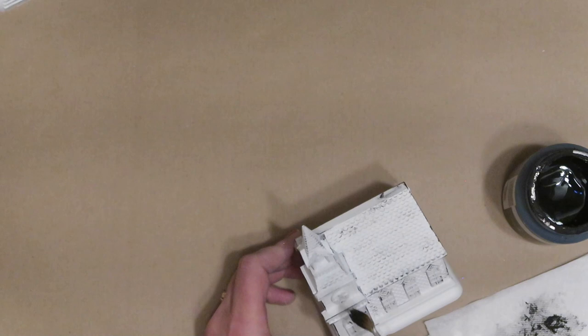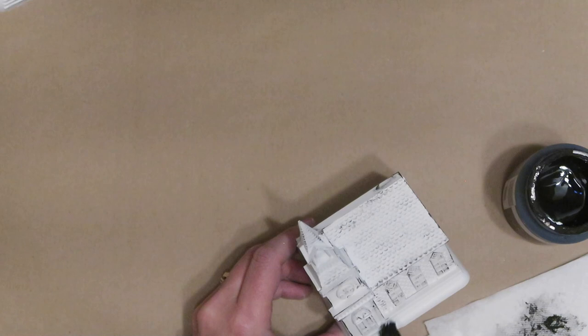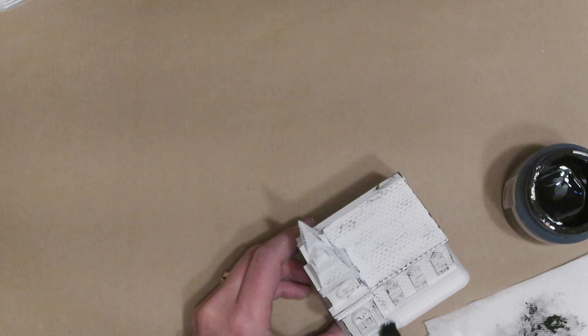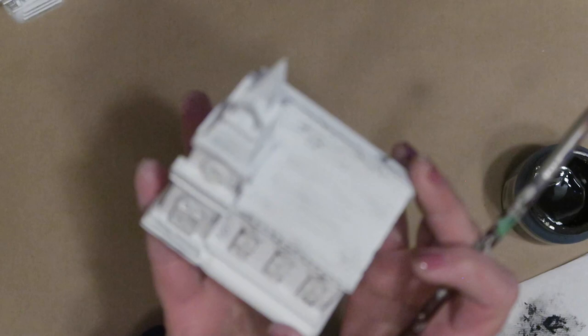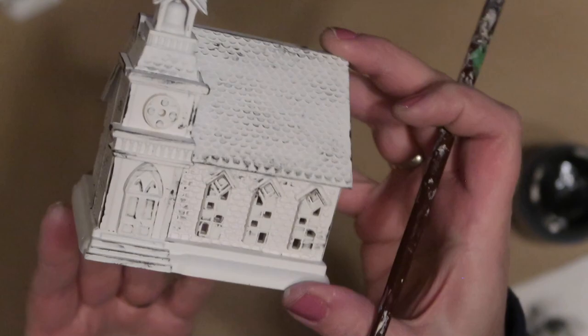So now I'm using just an old paintbrush and I'm going to dry brush some of the black chalk paint on some areas of the houses. I'm going to hit all of the corners and the edges and a few of the raised areas and just some various places on the roofs, just to give them a little bit more of an aged look. And this will also break up the white and bring out the details of each building.